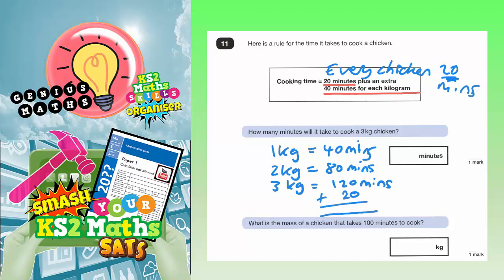So if you add on the extra 20, 2 plus 2 is 4, 1 plus nothing is 1. So you're going to end up with 140 minutes, which is your final answer for a 3 kilogram chicken.